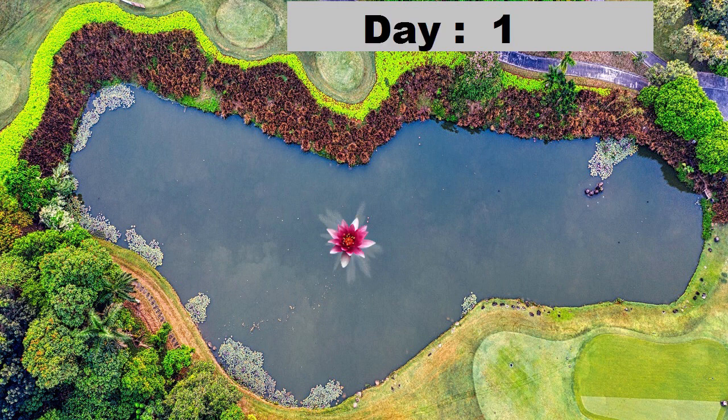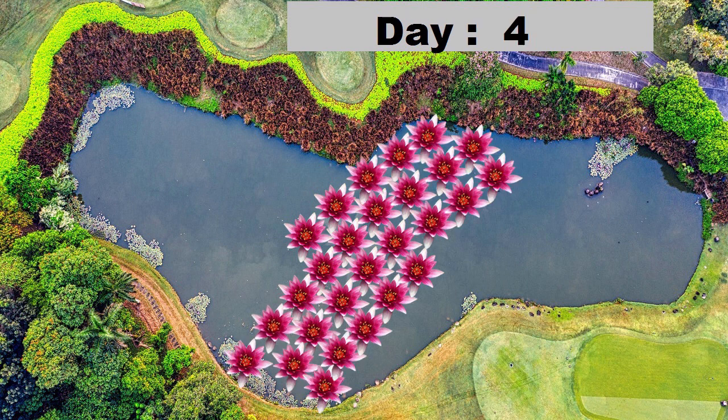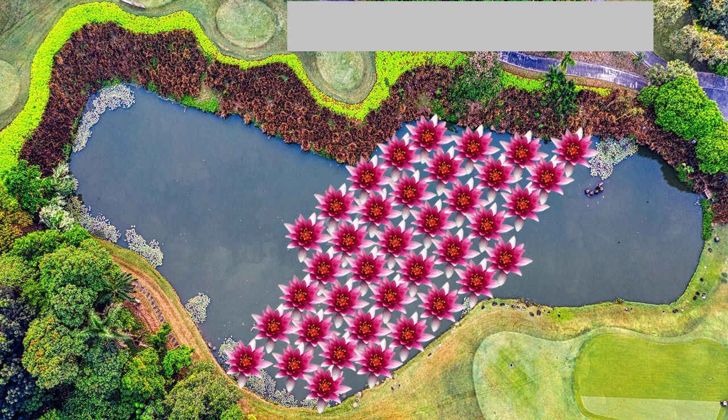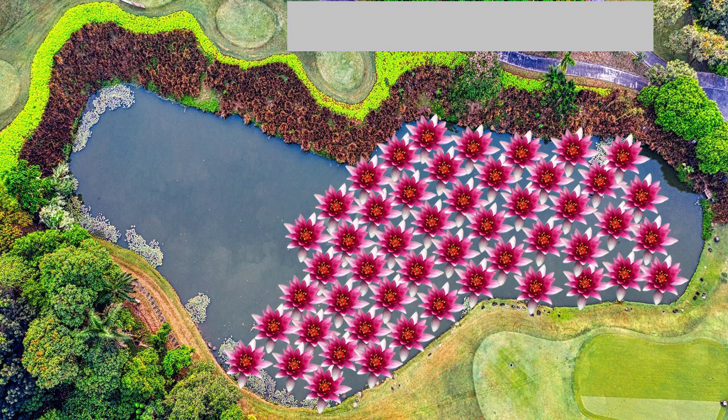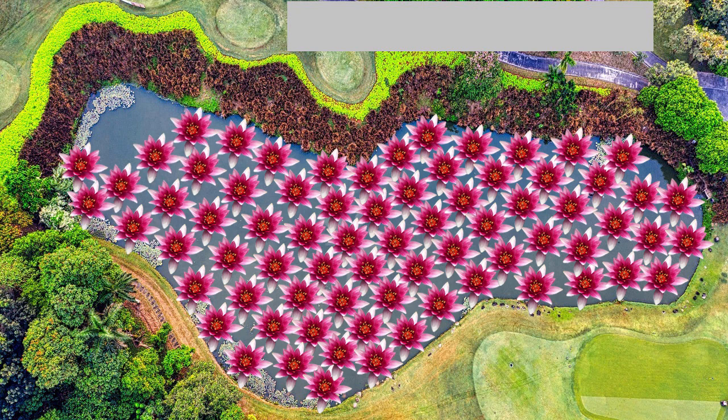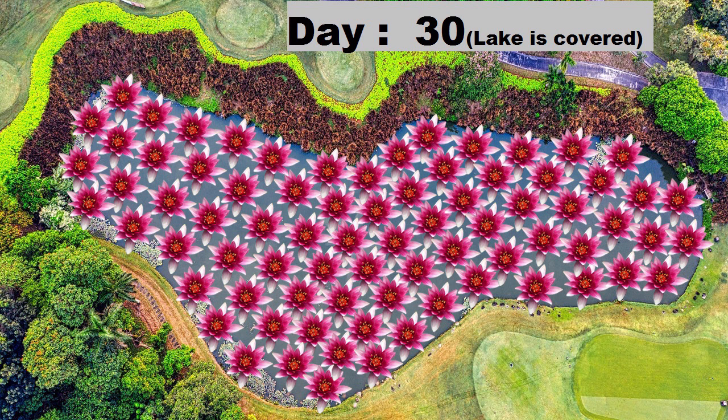Let us consider on the first day, at the very beginning, there is only one water lily in this pond or lake. Every day the number of lilies doubles in area. The second condition is it takes a total of 30 days for the lake to become completely covered with water lilies.